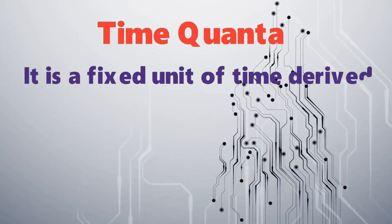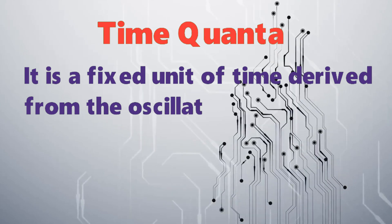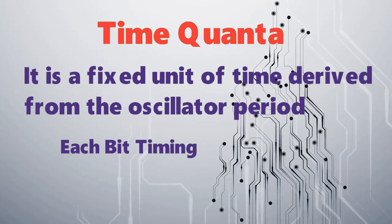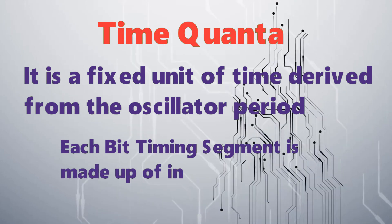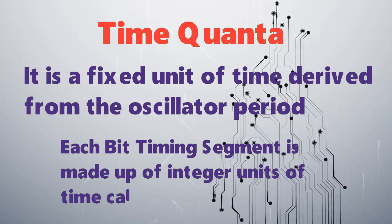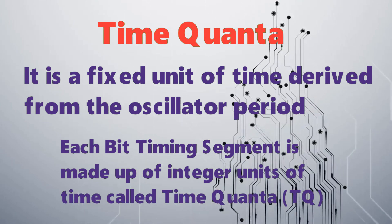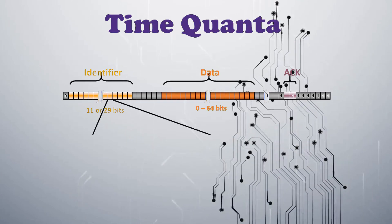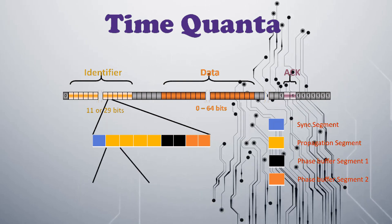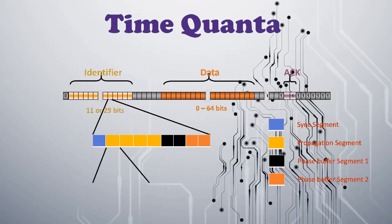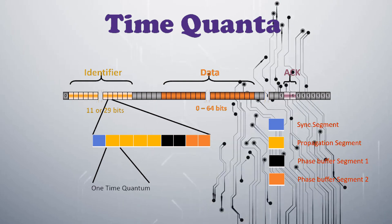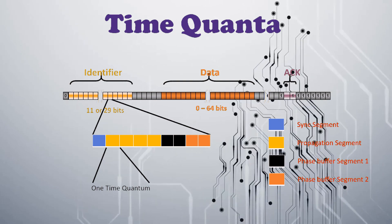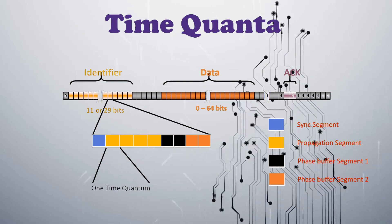Time quanta is a fixed unit of time derived from the oscillator period. Each bit timing segment is made up of integer units of time called time quanta, i.e. TQ. This is how the different segments are made up of time quanta — one segment is made up of 1 time quanta and the other segments are made up of 4 and 2 time quantas.